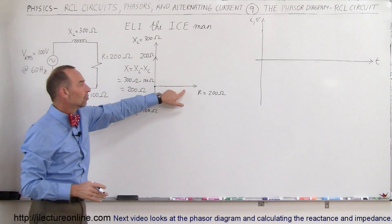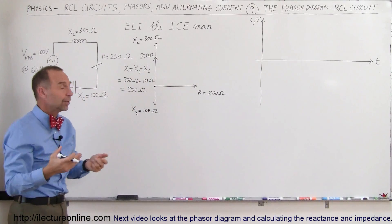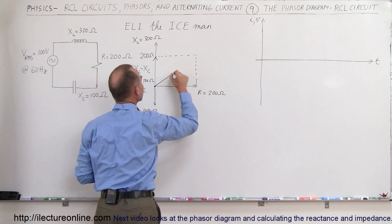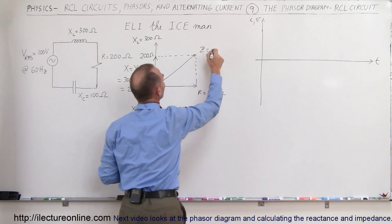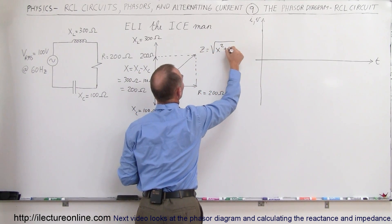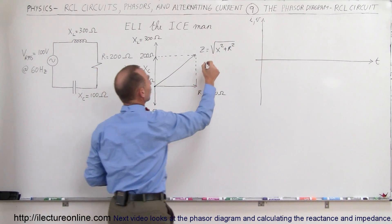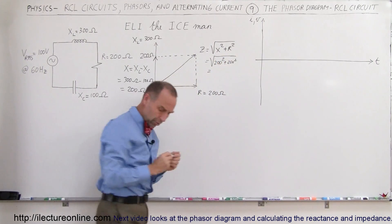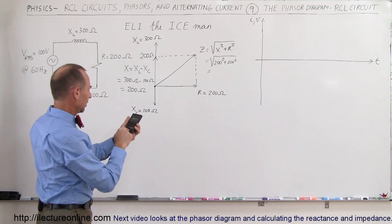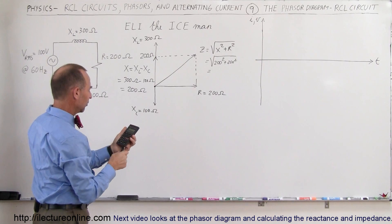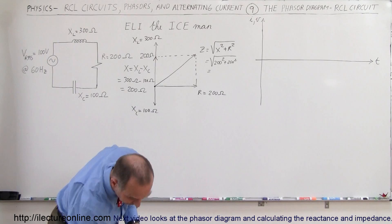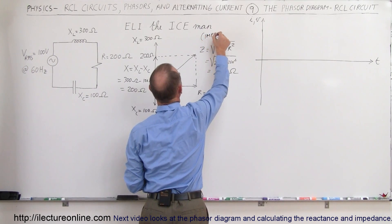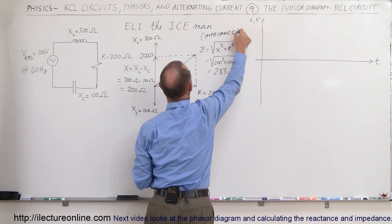Now we add that net reactance to the resistance of the resistor. Notice there's a 90-degree phase difference, so we add them as vectors using the Pythagorean theorem. Z equals the square root of X squared plus R squared — the square root of 200 squared plus 200 squared, which equals the square root of 200 squared times 2. That gives us approximately 283 ohms, which is the impedance — the total opposition of the circuit.